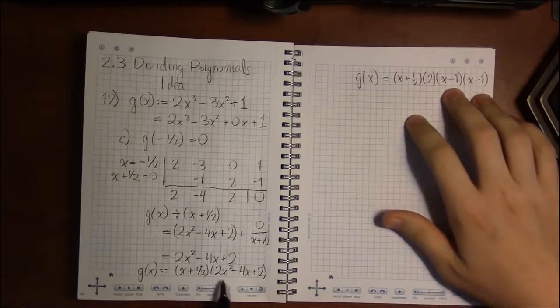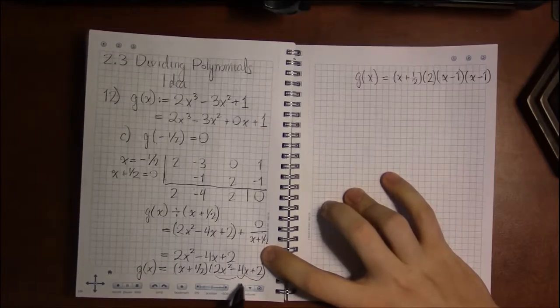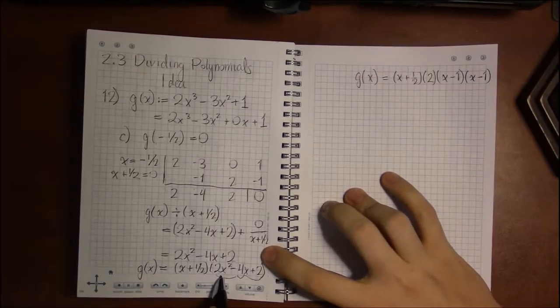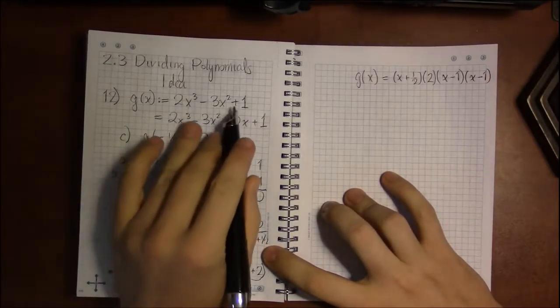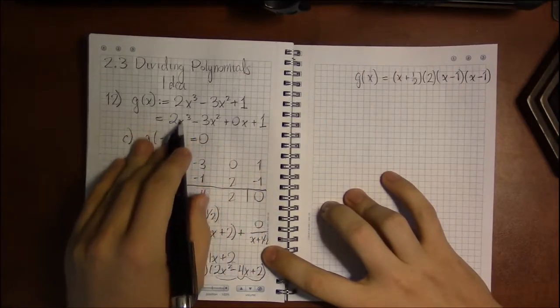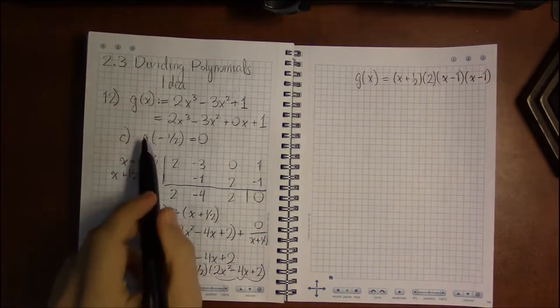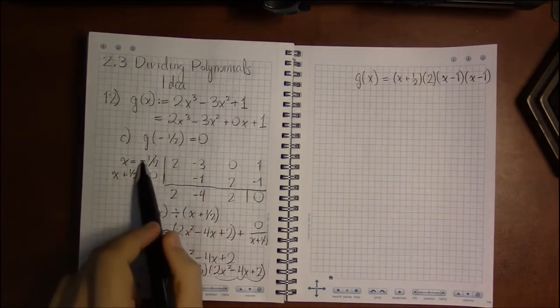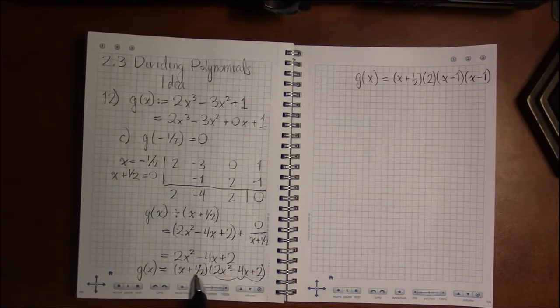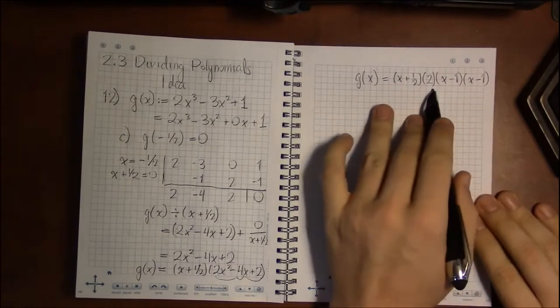But the point is, we know how to solve, we know how to factor a quadratic. We didn't know how to factor cubics, but I just factored one. And all it took was knowing one 0, I could pull that out and I'm down to a quadratic, something I know how to factor.